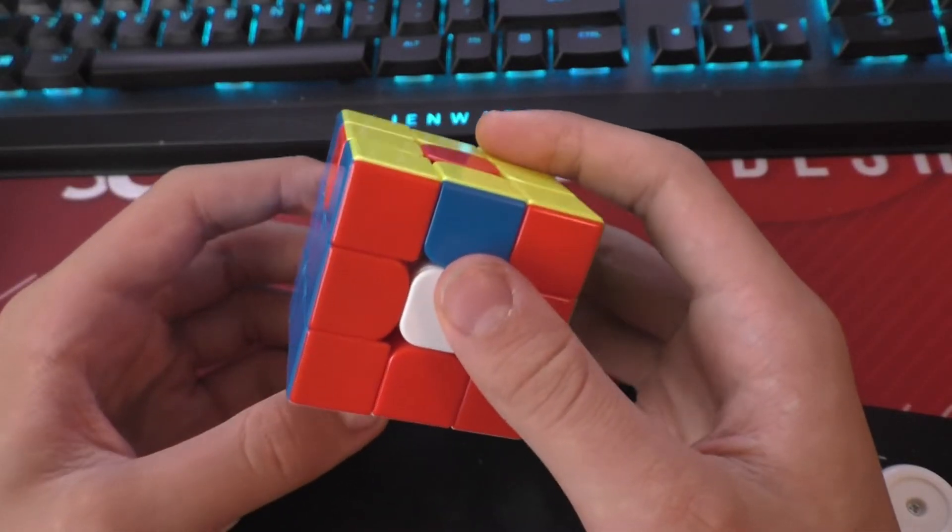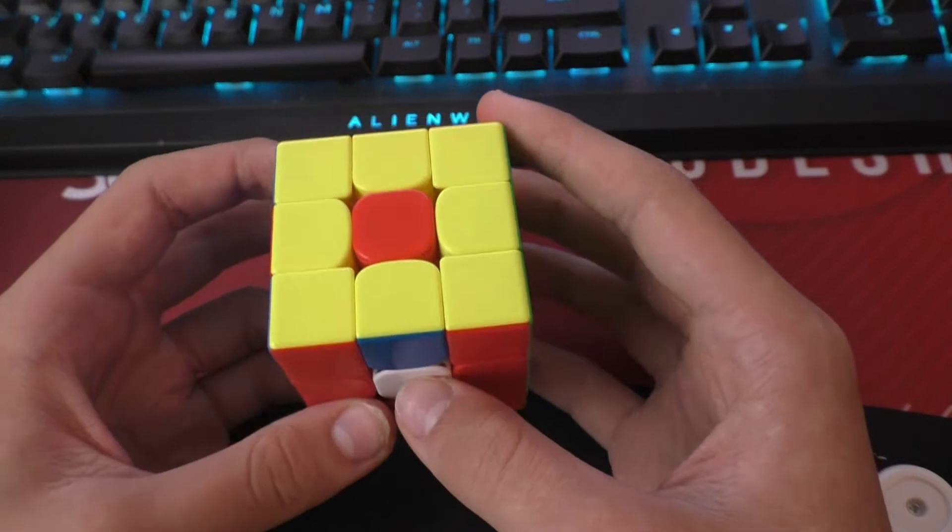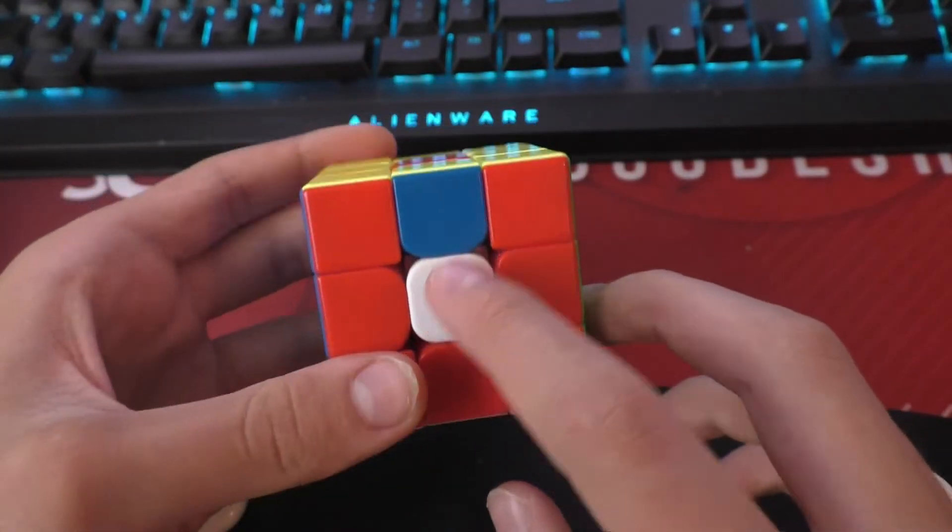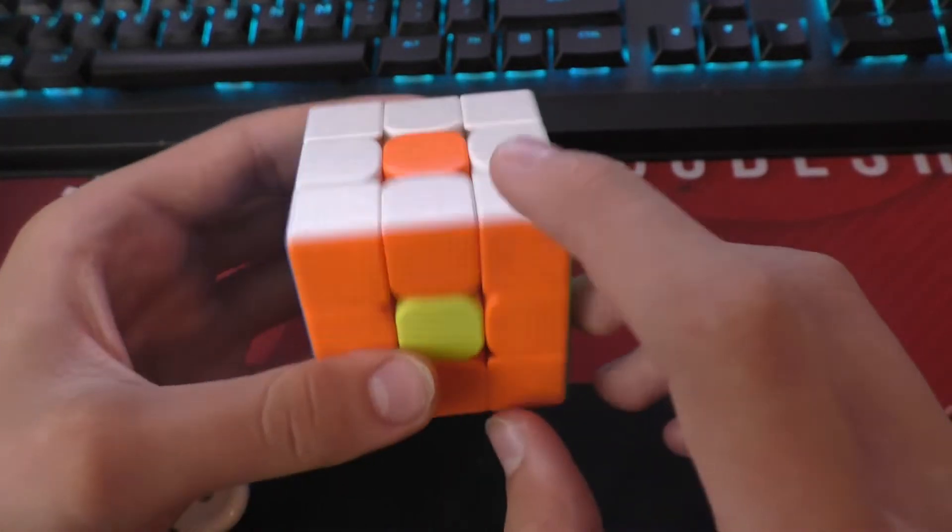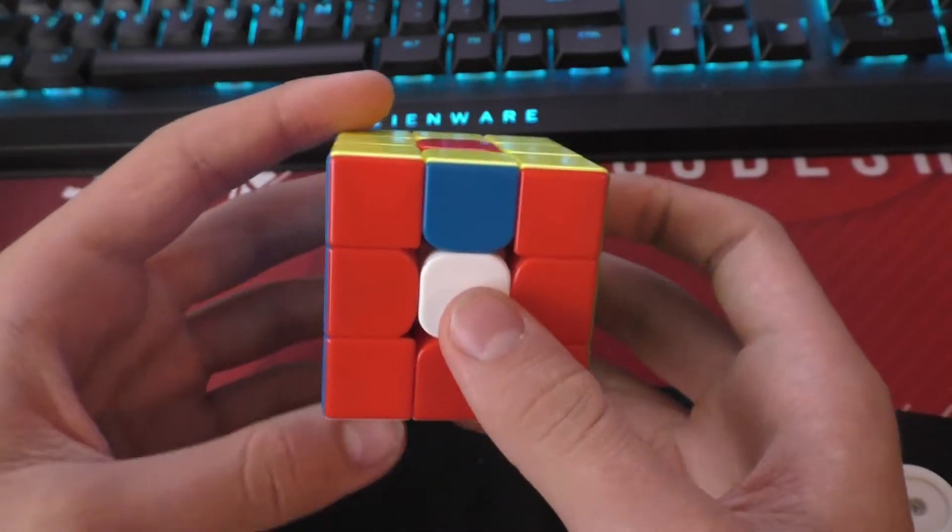Well, this is because the centers are in a 4-cycle type pattern, which is literally center parity. White has moved to red, which has moved to yellow, which has moved to orange, which has moved to white. And this is an impossible case.